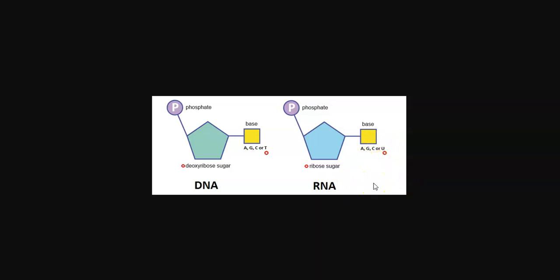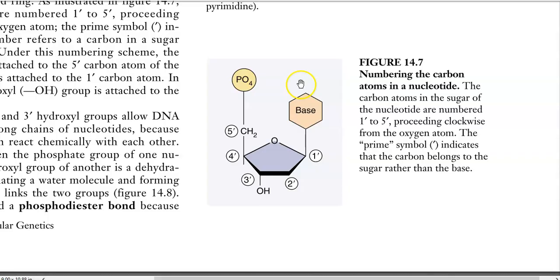Uracil has been replaced with thymine in DNA, which gives more stability to the DNA molecule. That is the reason why DNA is widely distributed in living organisms as a hereditary material.